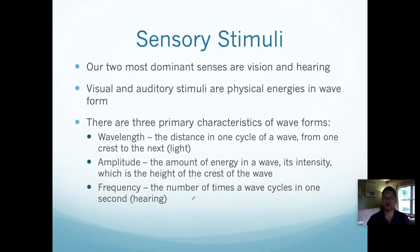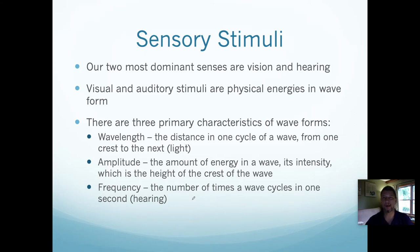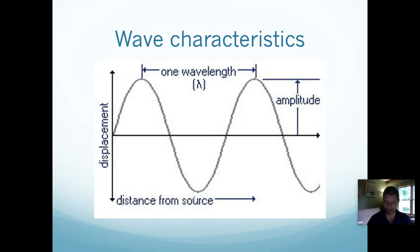The first characteristic is wavelength — the distance in one cycle of a wave. The wavelength is essentially the distance from one crest to the next crest, at least in light. Sound moves a little bit differently; sound is actually a longitudinal wave. But light is a transverse wave — it goes up and down, like a sine curve or a cosine curve.